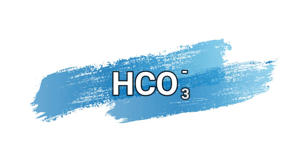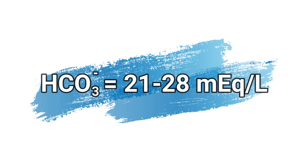Per HCO3- si intendono i bicarbonati. La loro concentrazione ematica è controllata dai reni. Il valore di bicarbonati nel sangue arterioso è tra i 21 e i 28 mEq/L.